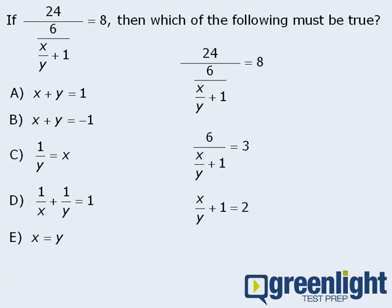At this point, we're almost done. We now have something plus 1 equals 2. So that something must equal 1. In other words, this part, x over y, must equal 1.